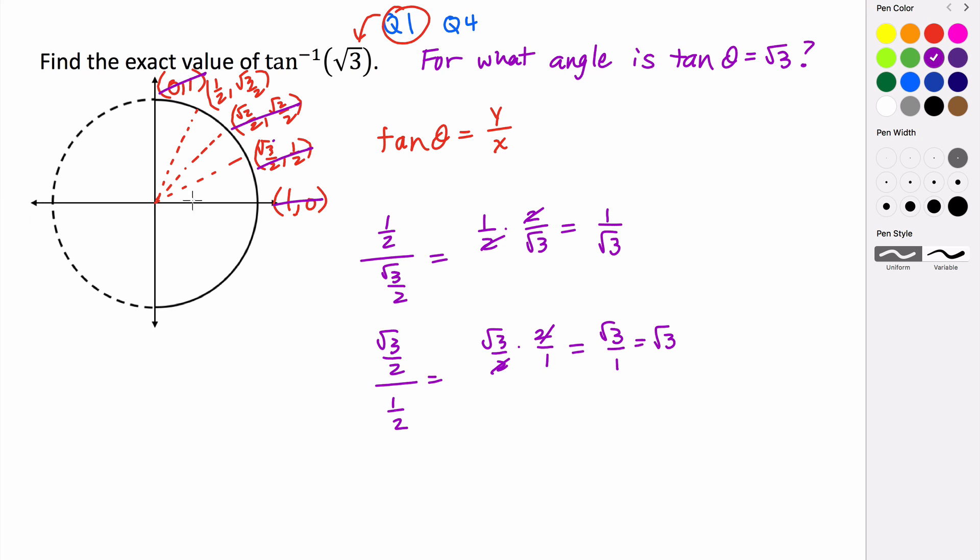So it looks like it's going to be this angle, which is π/3. So this happens when theta is equal to π/3. So we can say that the inverse tangent of √3 is equal to π/3.